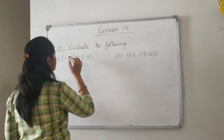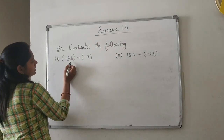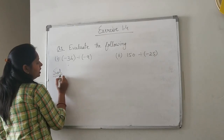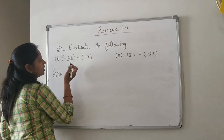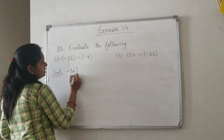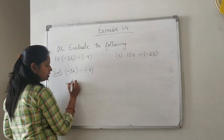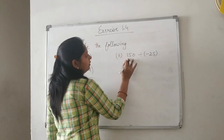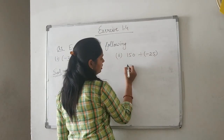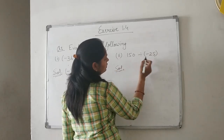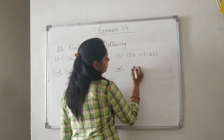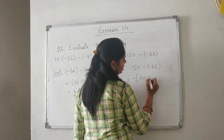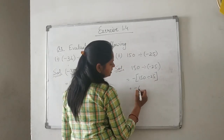Now, exercise 1.4. The first question asks us to evaluate the following. Minus 36 divided by minus 9 — both integers are negative, same sign, so the quotient is positive. 36 divided by 9 gives 4. Next, 150 divided by minus 25 — one positive, one negative, so the answer is negative. 150 divided by 25 gives 6, so the answer is minus 6.